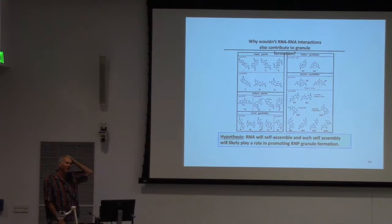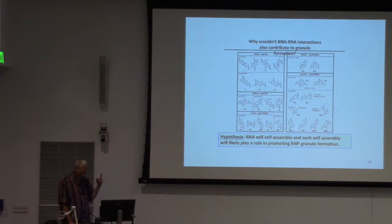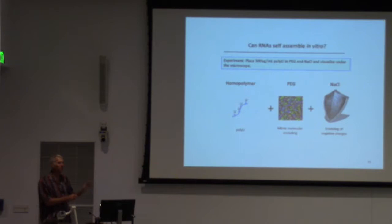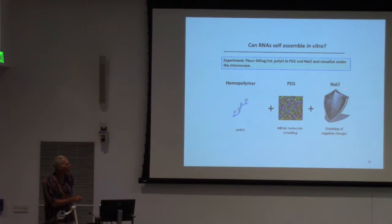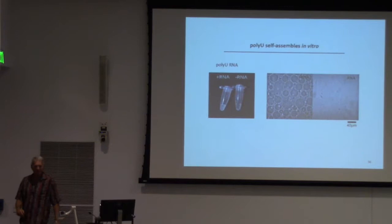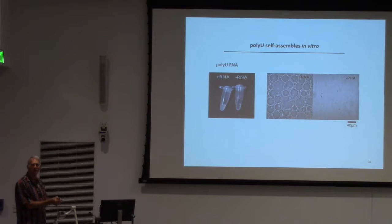We were discussing this one Friday morning in the lab, with a diversity of opinions. Brianna actually went to the fridge and found a tube of poly-U from like 20 years ago. She took some of it, mixed it with salt to mimic intracellular ion concentrations, and added PEG to mimic crowding. What was amazing was she saw cloudiness literally within half an hour—and if you look at the microscope, you get these assemblies of RNA. There's no protein. It's just RNA. Not only that, it's not even RNA that can base pair—it's just poly-U.